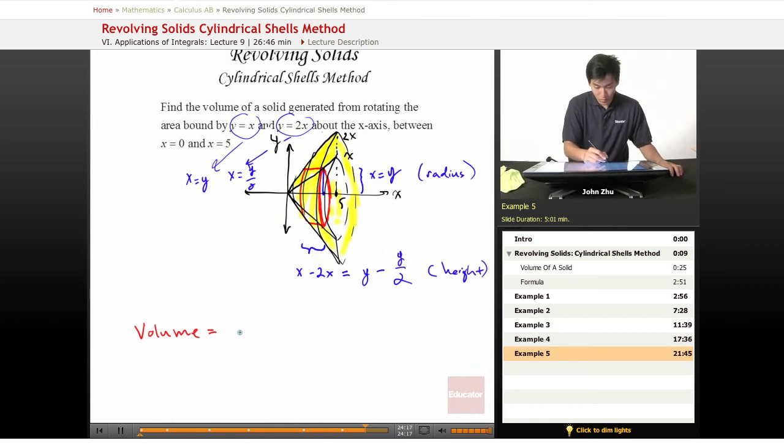Volume equals 2 pi from, well, we know that in the x direction it goes from 0 to 5. But we are not sure how far up it goes in the y direction. So thickness-wise, we want to integrate from, well, when x is 0, let's find out when x is 0, y equals...